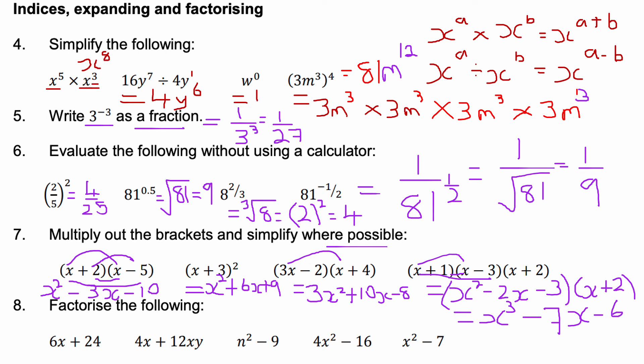If it's not making sense, check my video on expanding double and single brackets. When expanding double brackets, each term is multiplied by the corresponding terms in the other bracket, then collect like terms and simplify. If it's a quadratic, it's in the form ax squared plus bx plus c, where a, b, and c are coefficients. If it's a cubic, it's in the form ax cubed plus bx squared plus cx plus d, where a, b, c, and d are numbers.